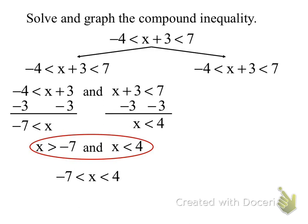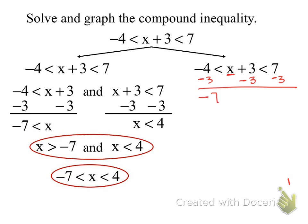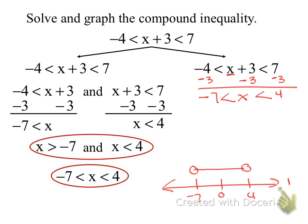The fast way: do all the math without splitting it. Subtract 3 from all three sections at once, and you get the same result — negative 7 is less than x, which is less than 4. Then we graph it. I need negative 7, 0, and 4 on the number line. Starting at negative 7, finishing at 4, drawing a line in between. Both are open circles.